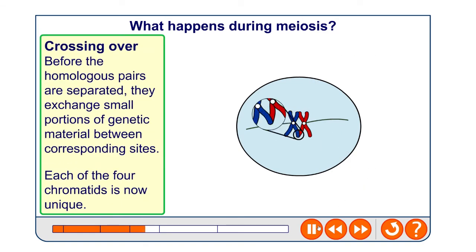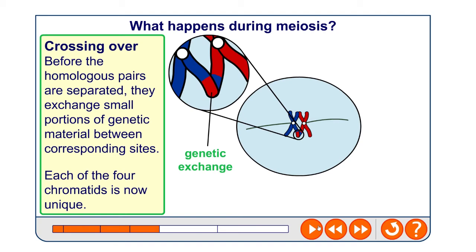Another difference is that when the chromosomes are lined up like this, they exchange information between each other — this is called crossing over. They exchange small portions of genetic material, which means the chromatids become totally unique. For example, you can get hair colour from your dad but not necessarily the same eye colour, because crossing over means each chromatid carries a unique combination of genetic information.